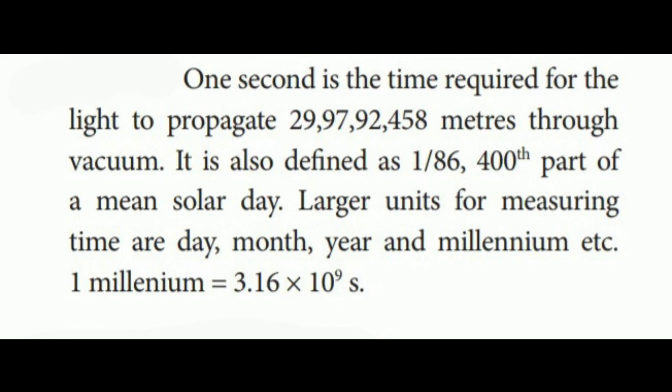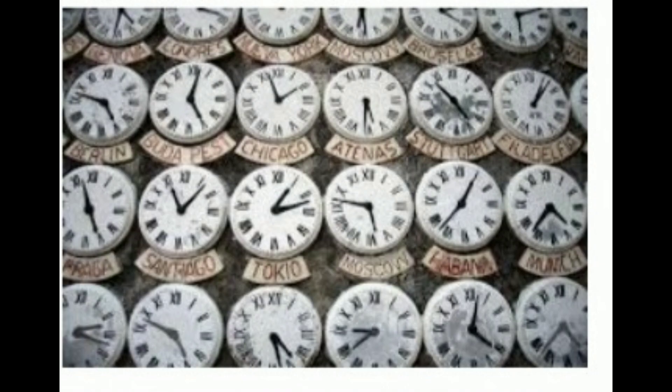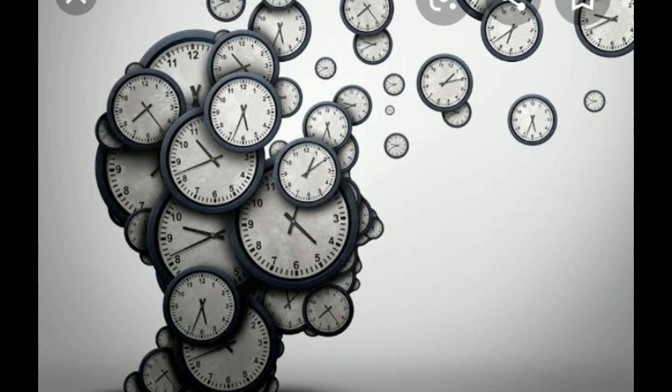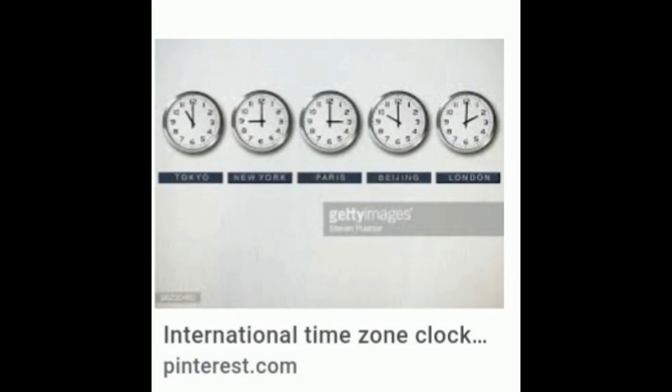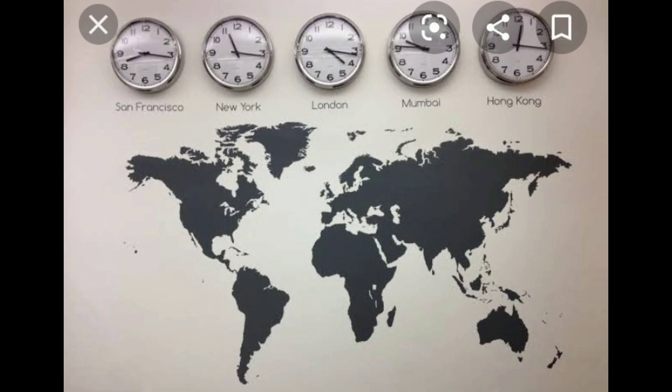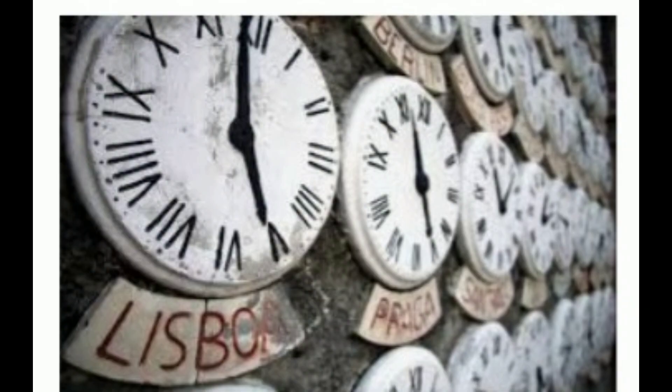One second is the time required for light to propagate 29,97,92,458 meters through vacuum. It is also defined as 1/86,400 part of mean solar day.